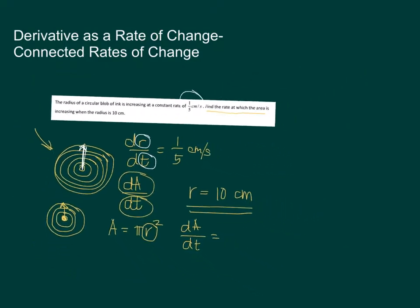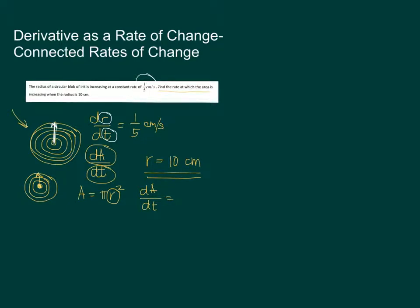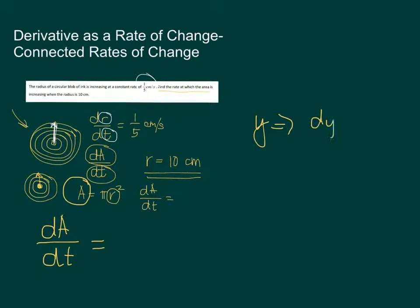If the area is π r², r is not the independent variable. To get the derivative of A with respect to time, the derivative of A is dA/dt. Just as the derivative of y with respect to x is dy/dx, if we differentiate with respect to time, the derivative of area is dA/dt.